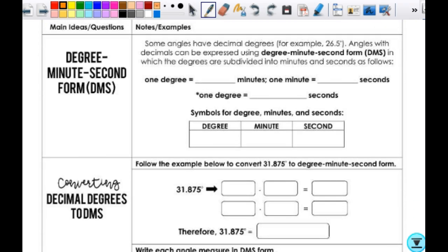Some angles have decimal degrees, for example, 26.5 degrees. Angles with decimals can be expressed using degree-minute-second form, or DMS, in which the degrees are subdivided into minutes and seconds as follows. It sounds weird because minutes and seconds sounds like it goes with time, right? The good news is you convert it just like time.